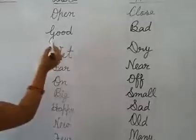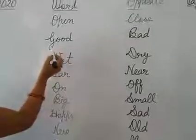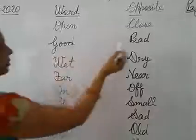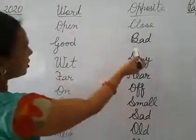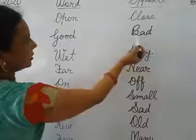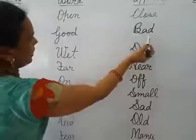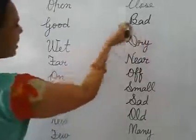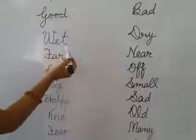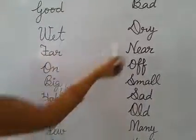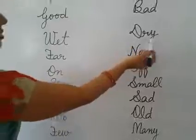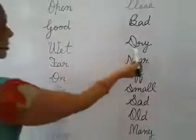Next. Say with me: G-O-O-D. Good. What is the opposite of good? B-A-D. Bad. Good. Bad. Next: W-E-T. Bad. D-R-Y. Dry. Bad. Dry.